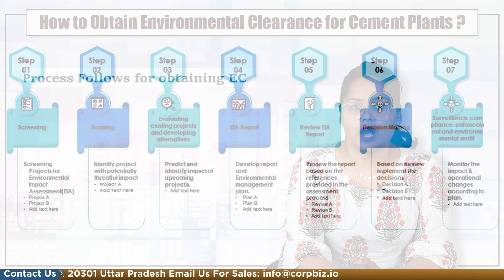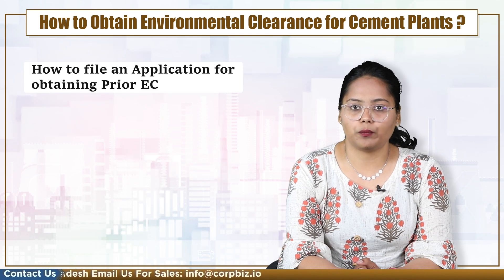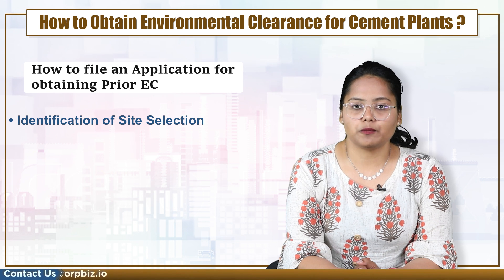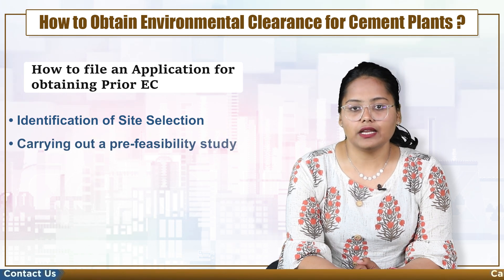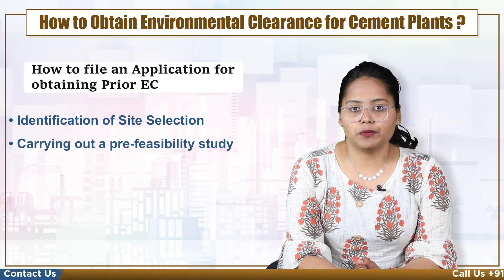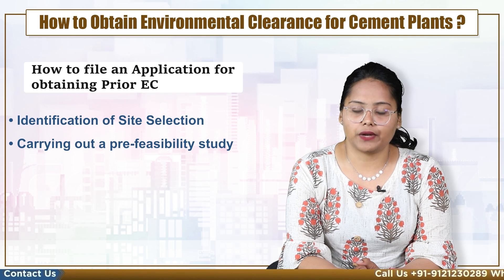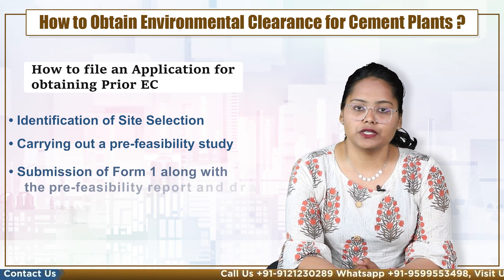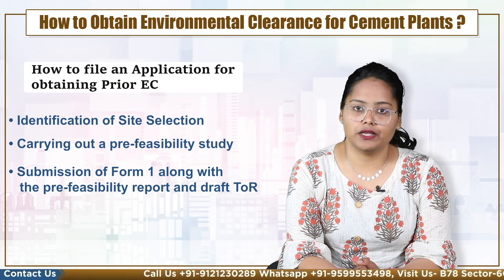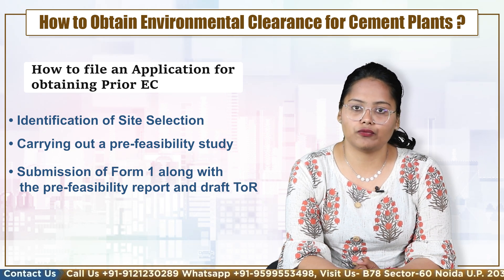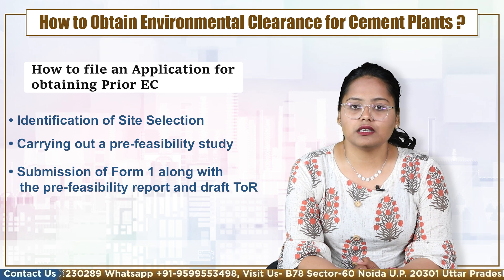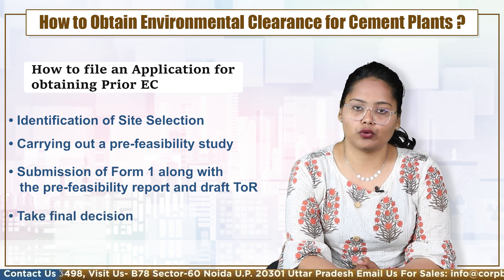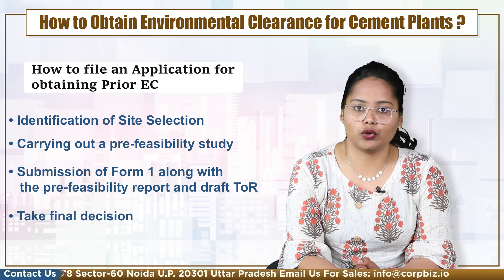Now we will understand how to file an application for obtaining prior EC. First, identification of site selection by the project proponent. Second, carrying out a pre-feasibility study required for obtaining prior EC for cement plants using Form 1. After the submission of Form 1 along with the PFR report and draft TOR for EIA studies, the concerned authority will give the final decision after scrutinizing the documents whether the project is approved or not.